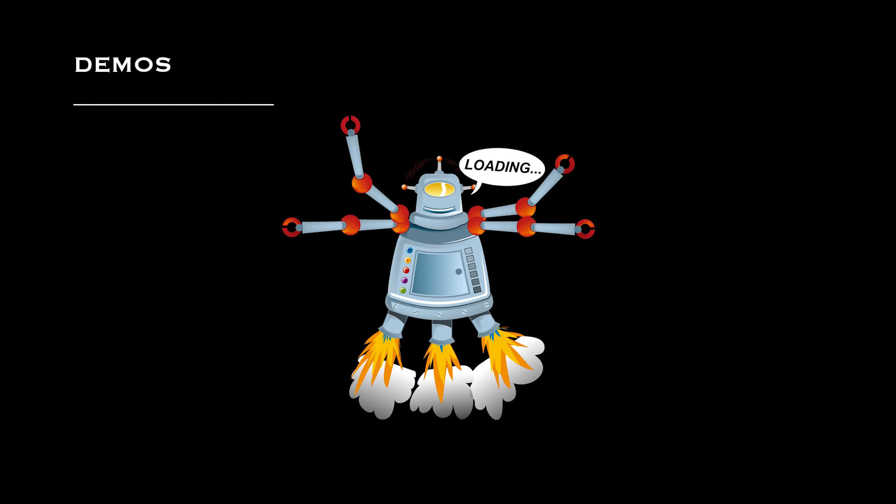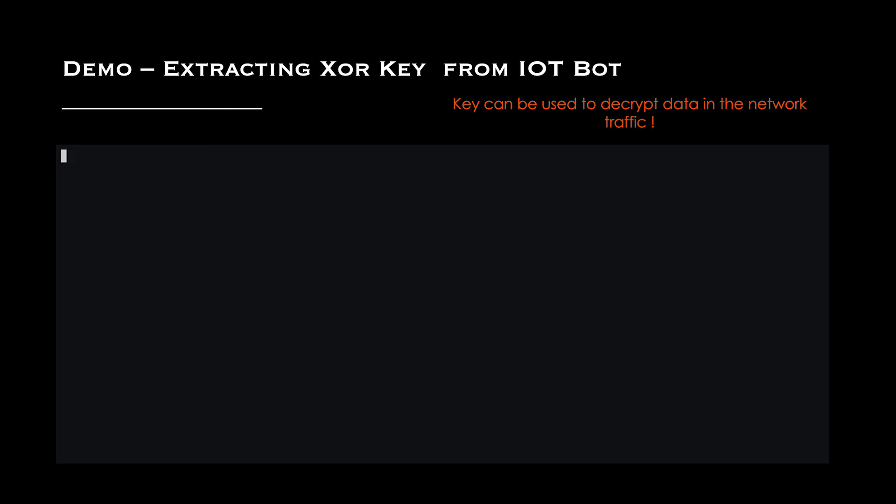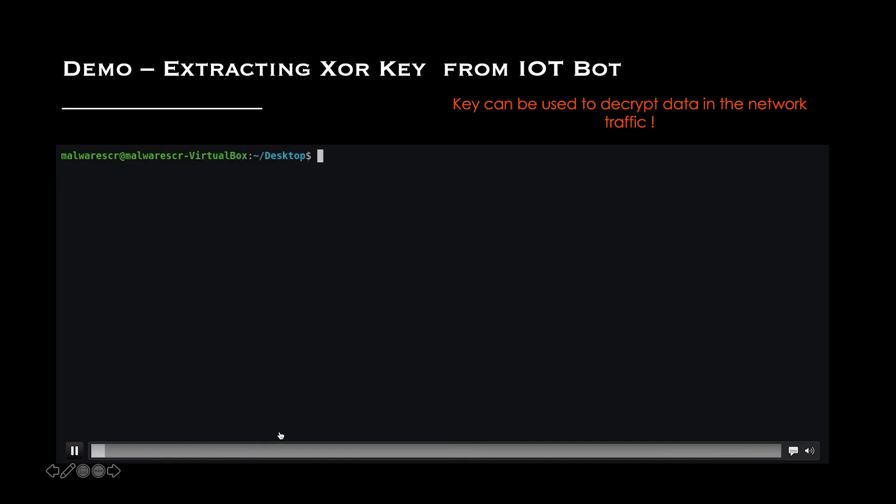Now let's go through a couple of interesting demos. The first is related to extracting the XOR key from Mirai and related variants. Once you extract the XOR key, it becomes easy to decrypt all the network traffic — specifically the data sent from compromised IoT devices to the C&C panel. This shows why reverse engineering is important and how it can be used to detect C&C panels. We'll use Radare2 to look into one of the IoT bot binaries.